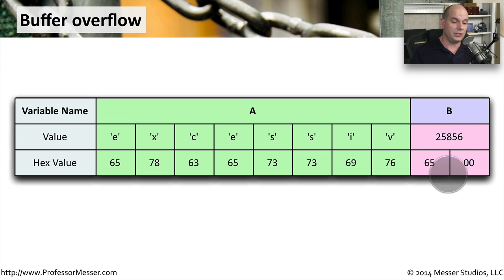If you look at the hexadecimal value of B now, it's changed because the number 65 is in the front of it. So 6500 in hexadecimal is 25,856 in decimal, which is a very different number than was there originally.